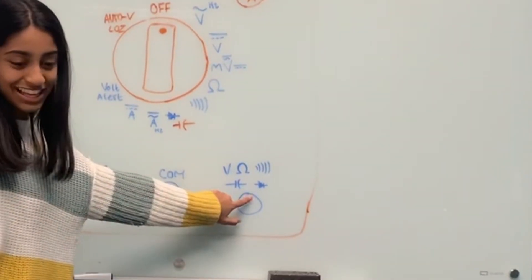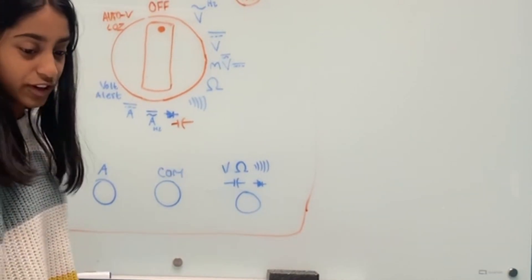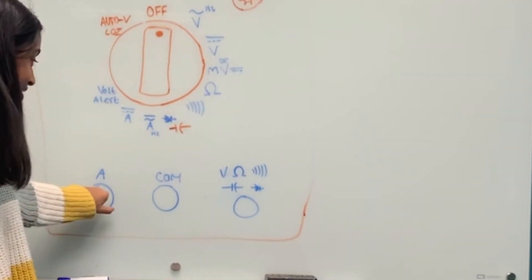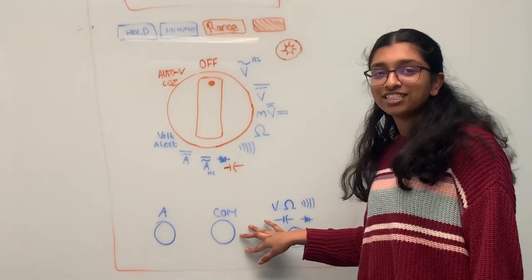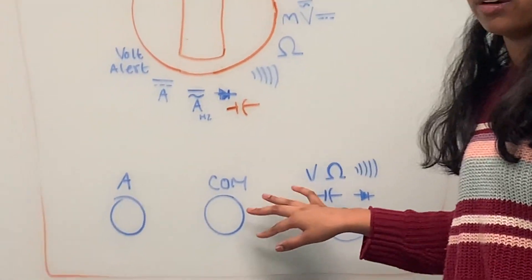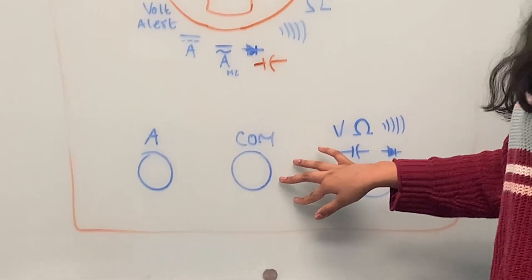And we have these three plug points at the bottom, and the first one, which is A, it measures up to 10 amps. This plug point is used to measure all measurements, the negative connection for circuit measurements.